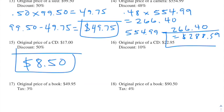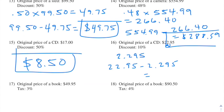Number sixteen: the original price of a CD is $22.95 and the discount is 10%. To find 10% of 22.95, I just move the decimal one place to the left and get $2.295. So I'm taking $22.95 and subtracting $2.295, and I end up getting $20.66 when rounded.